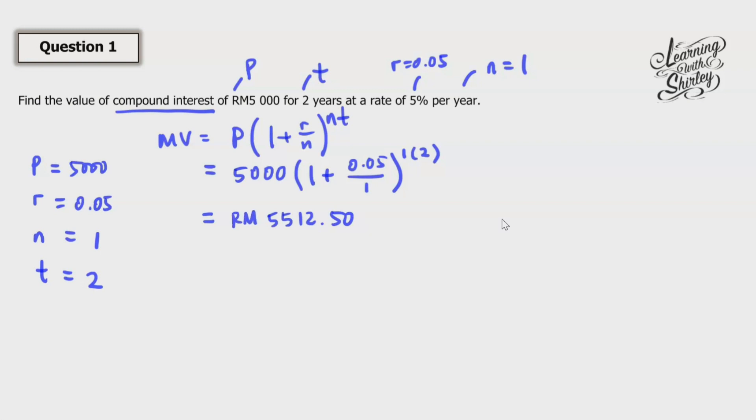So now the question asks you to find compound interest. Which means that you're going to use another formula, which is MV minus the principal. So equals to, this is 5512.50. So the principal was 5000. So minus 5000.